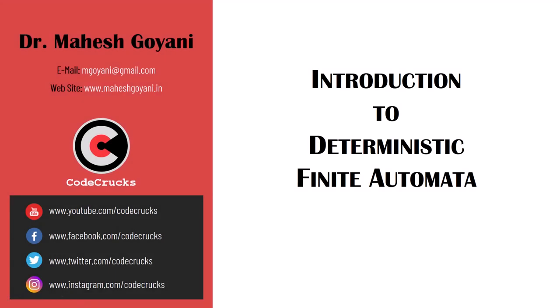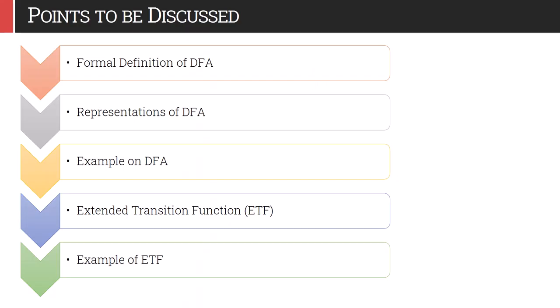Hello and welcome to CodeCrux. In this video we will talk about a specific type of finite automata called deterministic finite automata, or DFA for short. We will see how to define DFA formally, the ways we can represent DFA, various examples, and we will discuss the extended transition function, known as ETF, along with examples of ETF.